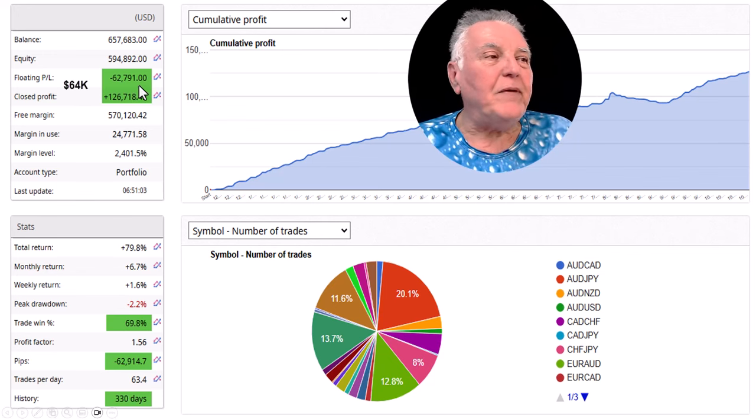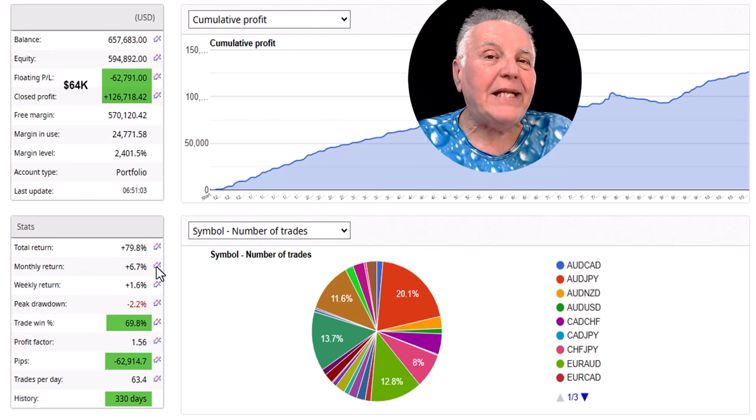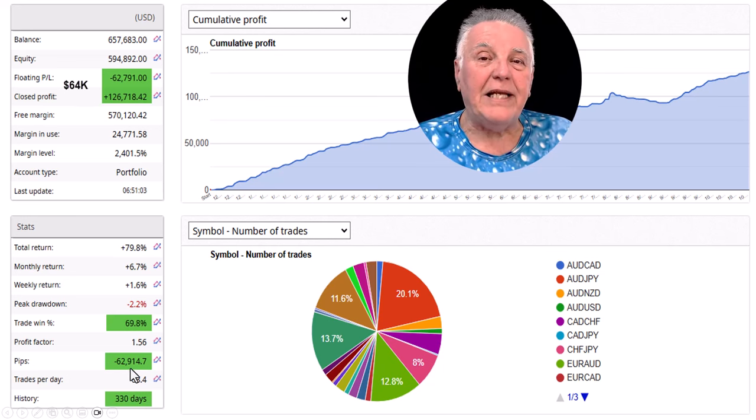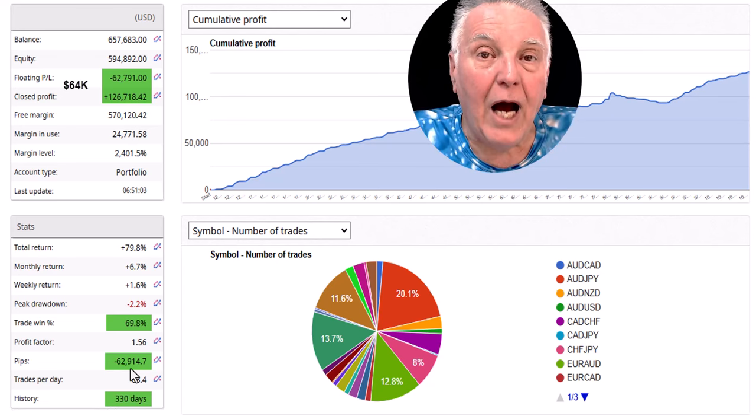The win rate was almost 70 percent and yet this portfolio has made these great returns with negative pips. So now let's go and do the math to show you exactly how this has happened.